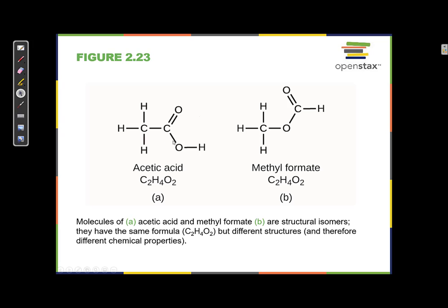Isomers have different properties: they have different boiling points, they smell differently, and in this case they're both liquids — but sometimes isomers don't even have the same phase, even though they have the same formula.